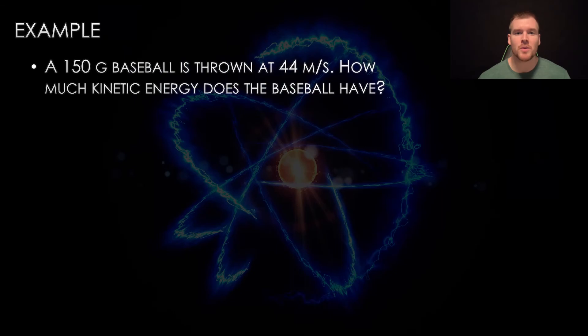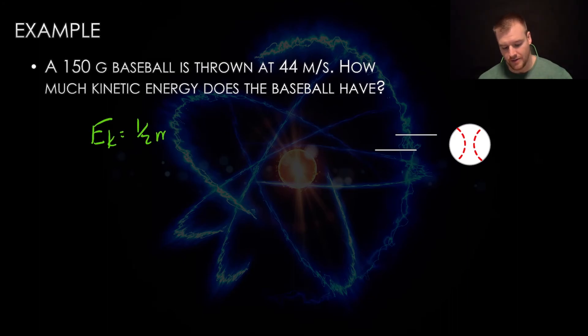Let's look at some examples. The first one is the easiest where you just plug in your numbers. A 150 gram baseball is being thrown at 44 meters per second. How much kinetic energy does the baseball have? So we'll set up EK equals half MV squared.